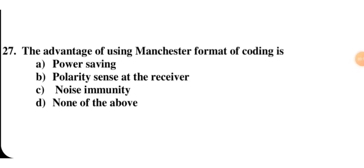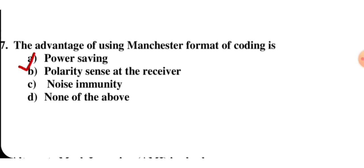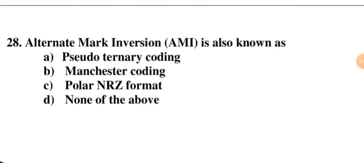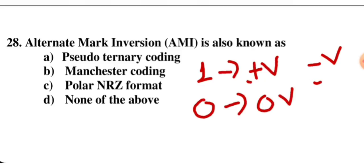The advantage of using the Manchester format of coding is power saving — option A is correct. Alternate mark inversion (AMI) is also known as what? In AMI, 1 is represented alternatively by plus V and minus V, and 0 by zero voltage — giving us three code levels. This is called pseudo-ternary code, so A is the correct option.